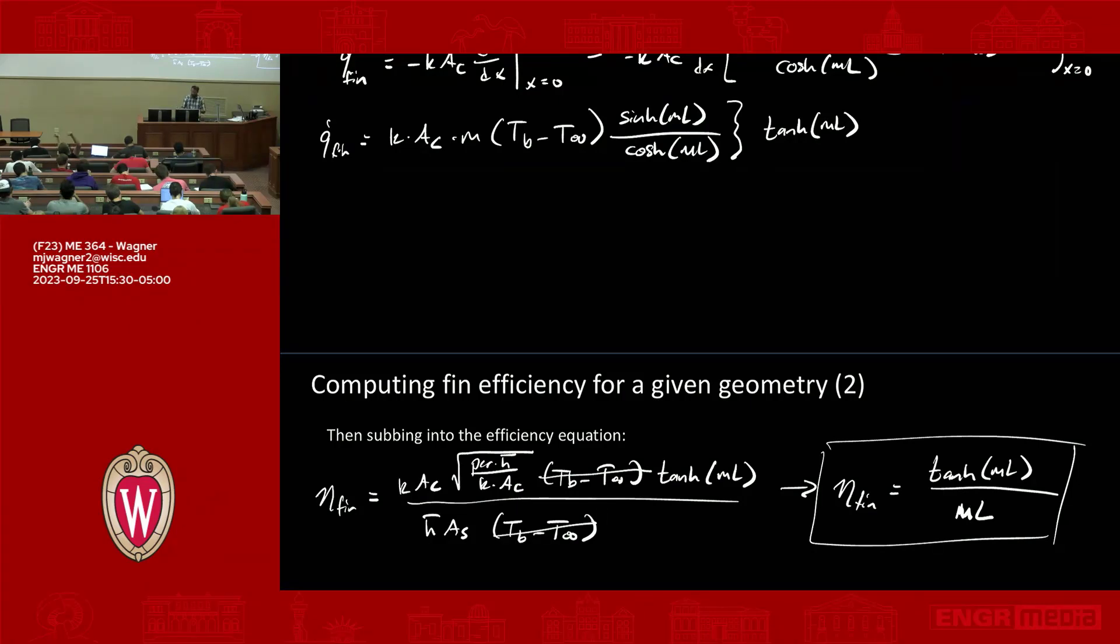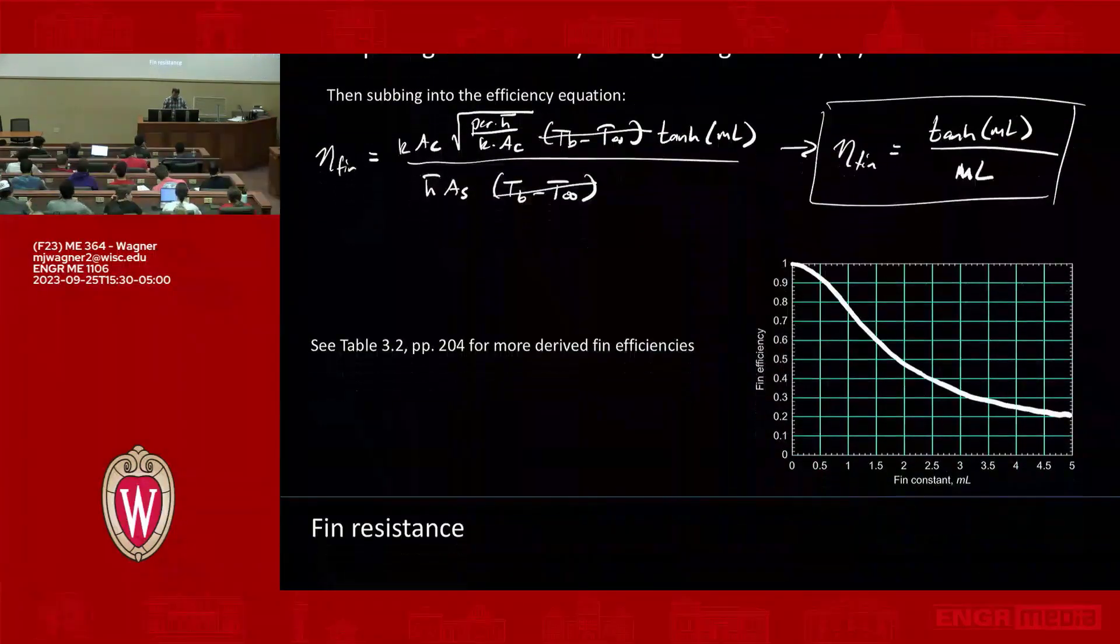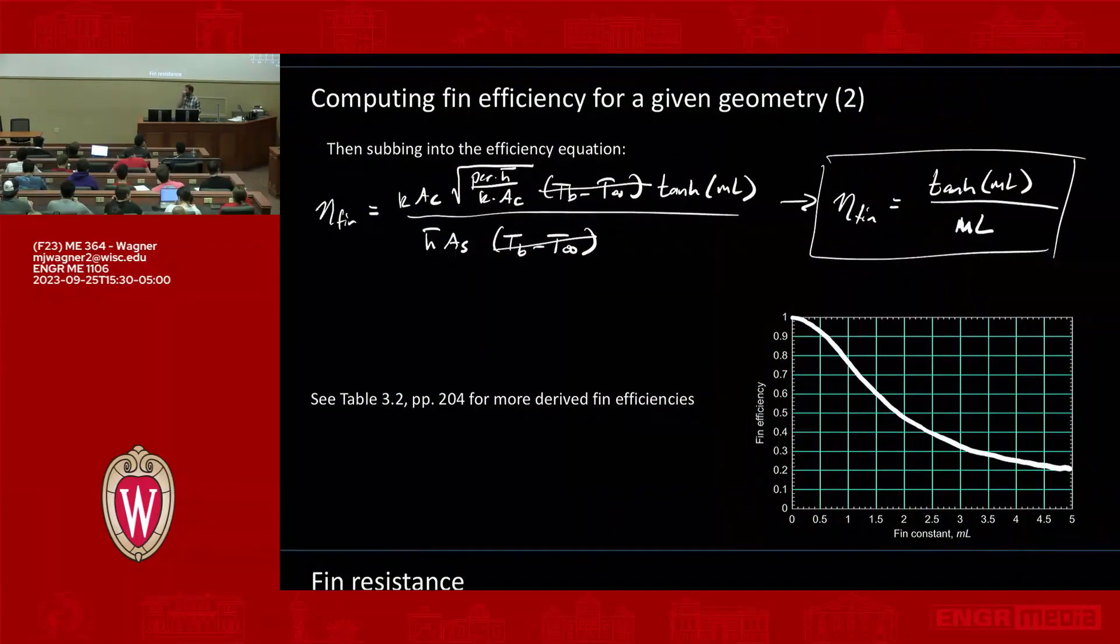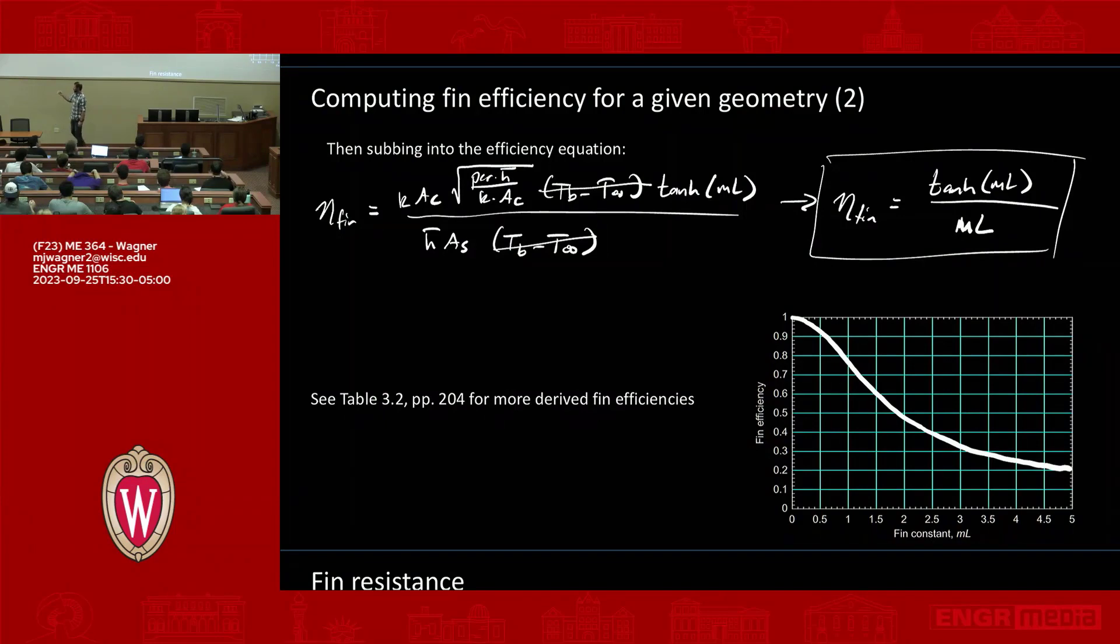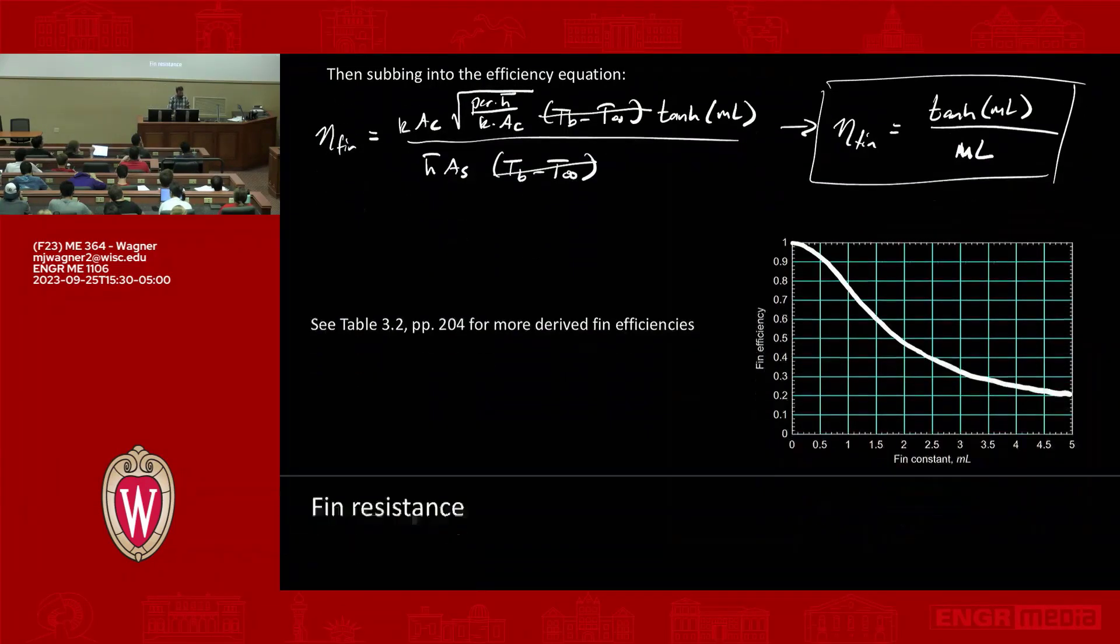So that's fin efficiency. I want to get to a couple other important ideas for your homework. Fin efficiency here. So you can plot this out as a function of the fin constant. It's just another way of looking at this. As you increase ML, you're adding this kind of extra area that's maybe not entirely at TB. So the fin efficiency should drop. So you compute ML. You can anticipate the temperature profile. You can also anticipate what the fin efficiency is going to look like.